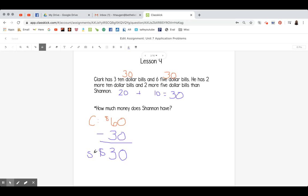So that is the answer to my question. Shannon has $30. Again, this was a multiple step problem that we had to do here. First, we had to figure out how much money Clark had and then how much more money he had than Shannon. And then we subtracted those numbers to get Shannon's amount of money.